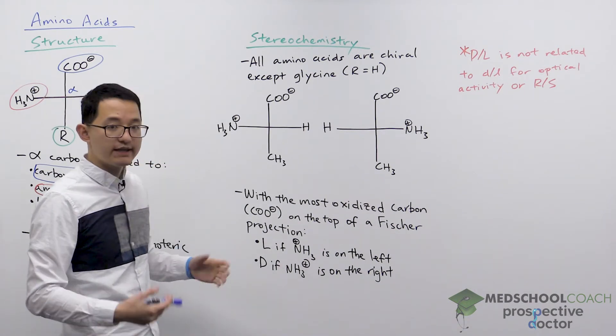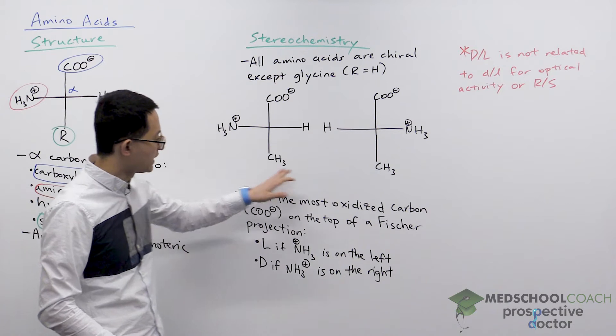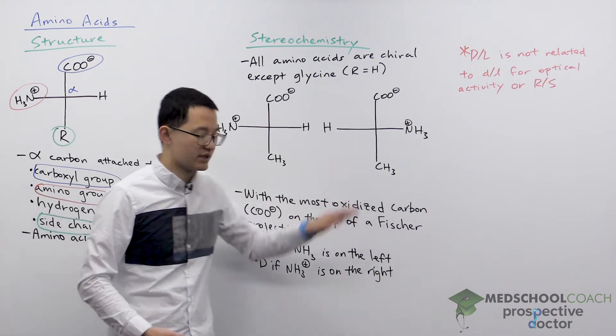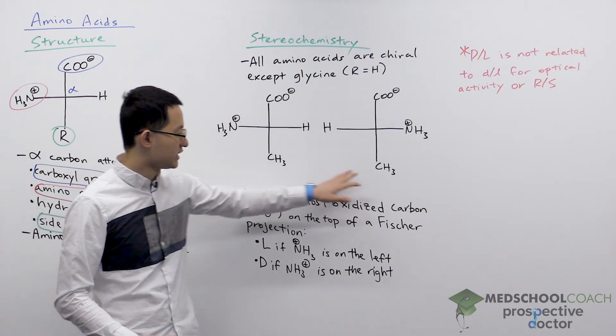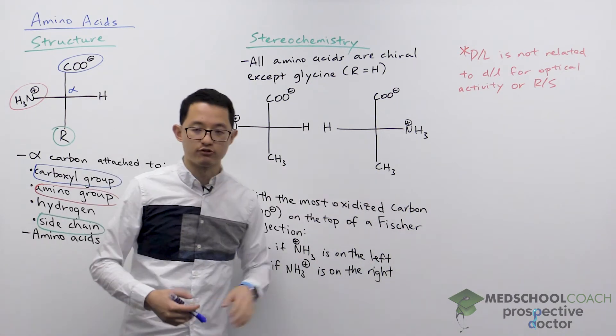And as chiral molecules they have enantiomers. Over here I have enantiomers of an amino acid, alanine, which has a side chain of CH3, a methyl group.